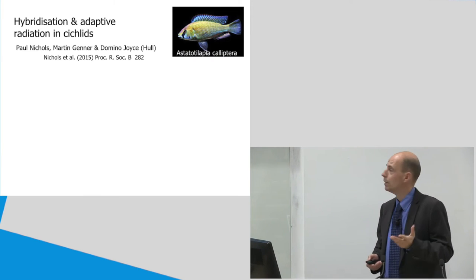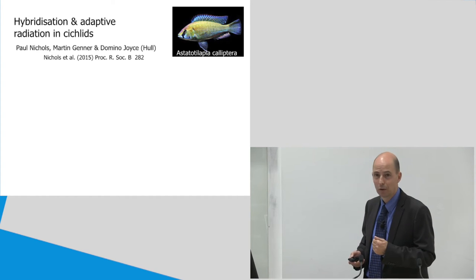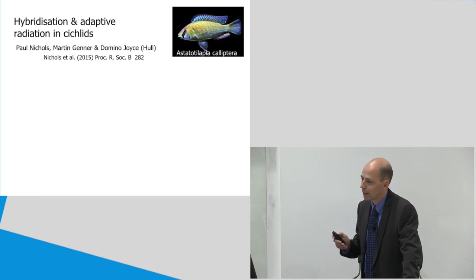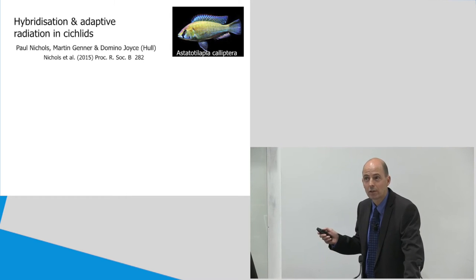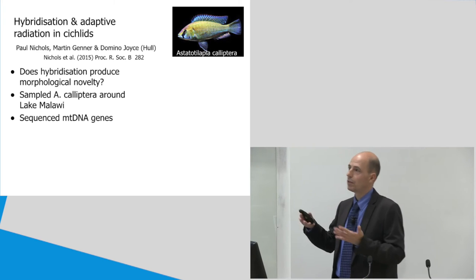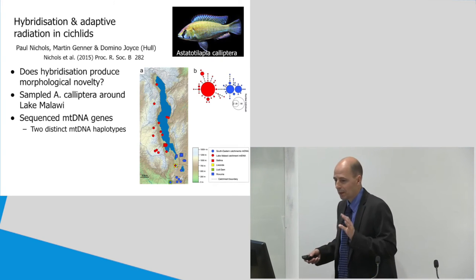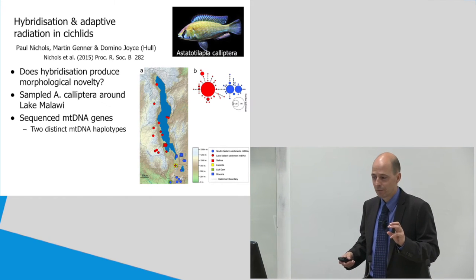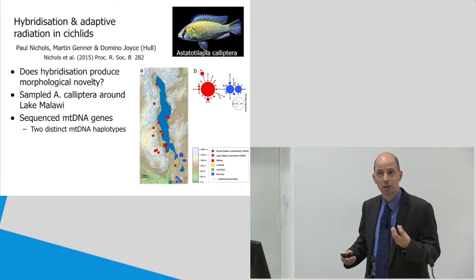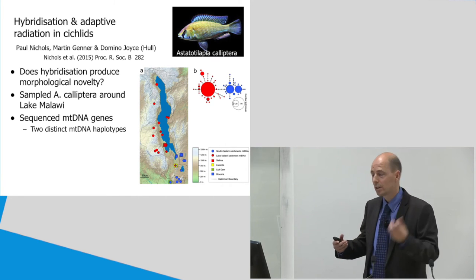And the reason I will tell you is now. We studied, and this is a study which we published recently in Proceedings of Royal Society, together with Paul Nichols and Domino Joyce from University of Hull, and Martin Genner, now at Bristol. This is a study on a river cichlid, Astatotilapia calliptera, which lives in the rivers around Lake Malawi. What we wanted to know is whether hybridization of these different river fish created morphological novelty. For this, we sampled around Lake Malawi, and we sequenced mtDNA genes. Now, mtDNA is a very good marker to trace back the ancestry of individuals, because unlike nuclear genes, it doesn't recombine. So, you can find out, without the problems of recombination, where sequences originate from.